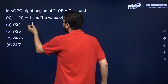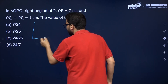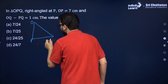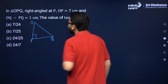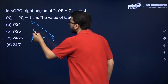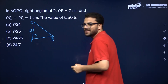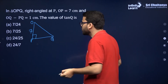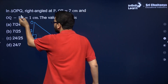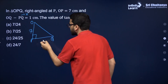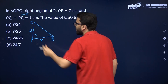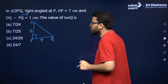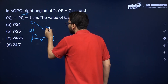You have a right angled triangle OPQ, right angled at P. OP is equal to 7 cm. PQ and OQ you don't know. Suppose PQ is equal to X. So OQ is equal to X plus 1, since it goes on the other side of the equation.